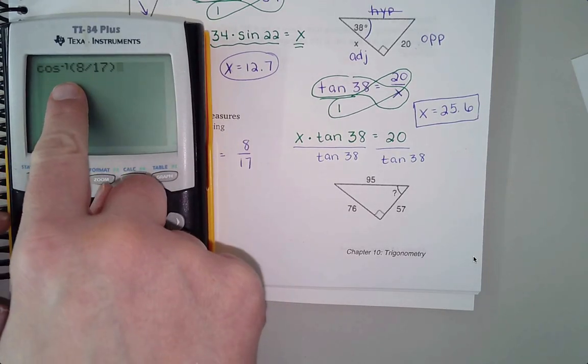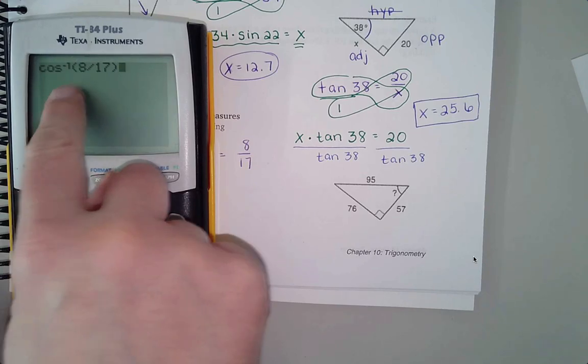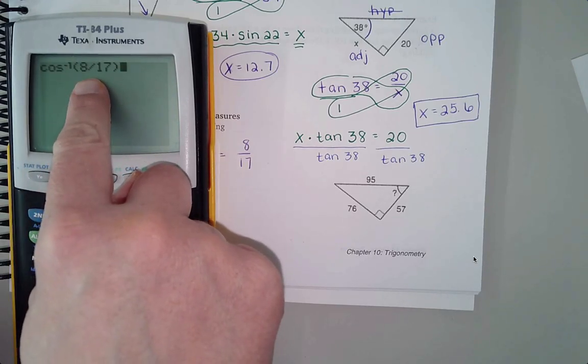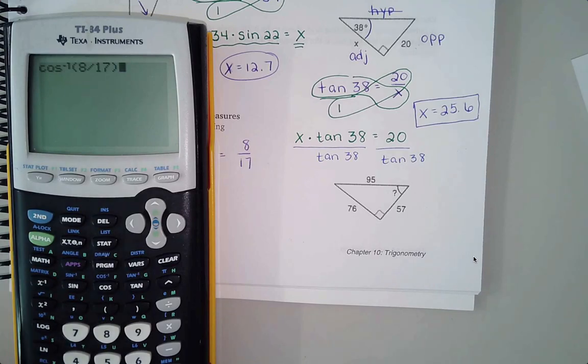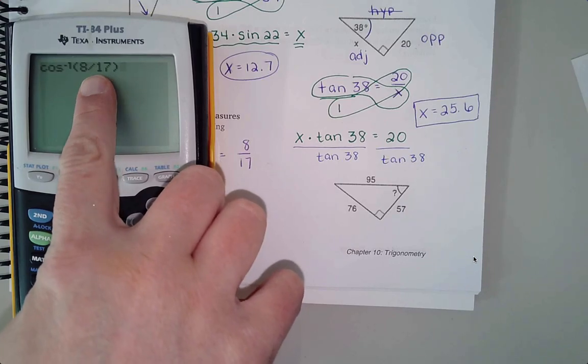And what this is really asking is it's asking the calculator what angle has this ratio for its cosine. It's asking the calculator to go in its big database of all the different cosine values and find the angle that goes along with that relationship.